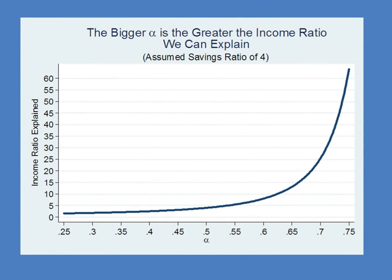If alpha equals one-third, we're only going to be able to explain an income ratio of two with a savings ratio of four. In other words, the Solow model has real difficulty explaining large income ratios even with large savings ratios when alpha equals one-third.